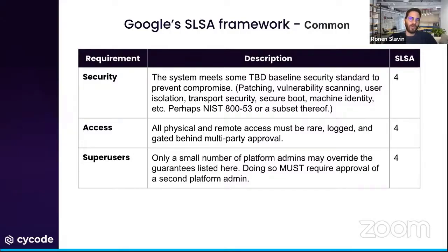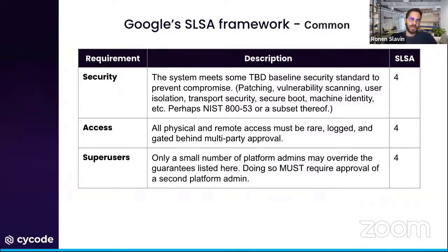The last part of the framework is common controls — requirements that should be used in every trusted system involved in your software supply chain, including code, build, and distribution tools. Requirements include meeting a security baseline (yet to be determined), strong access control, logging access, using multi-factor authentication, and minimizing the number of people with administrator access to these tools — because of the threats that derive from users with high privilege.